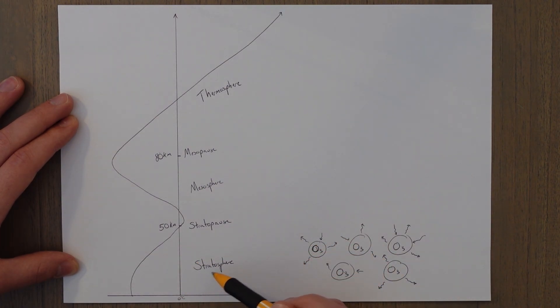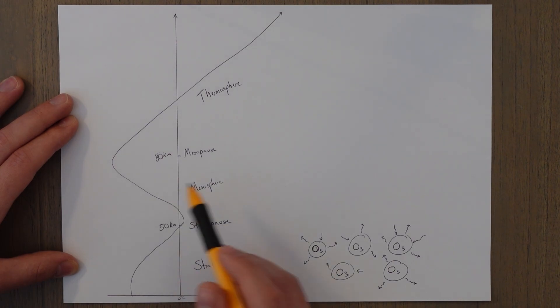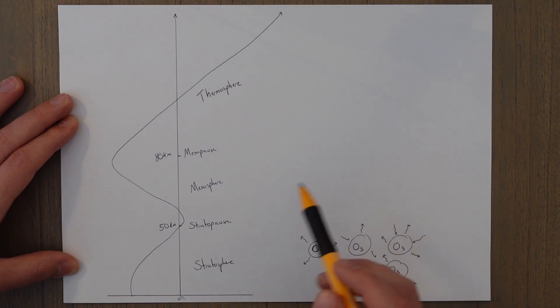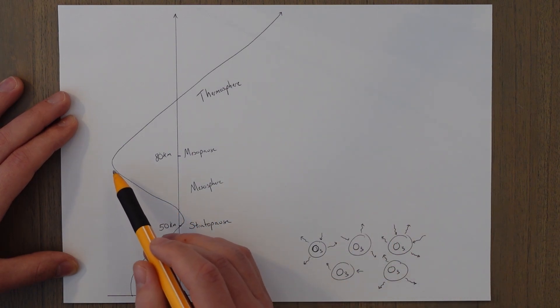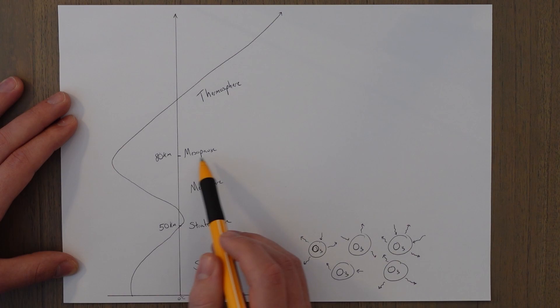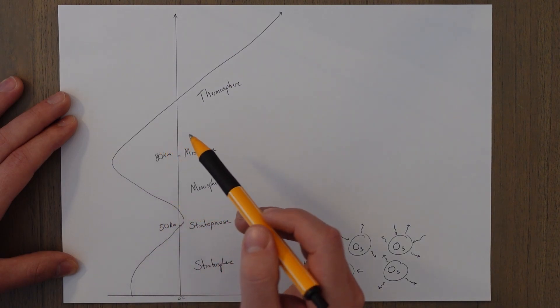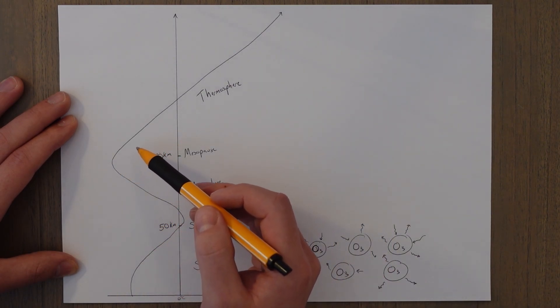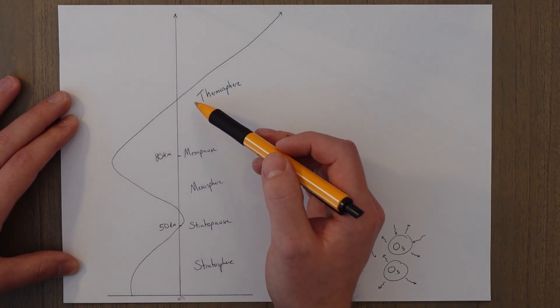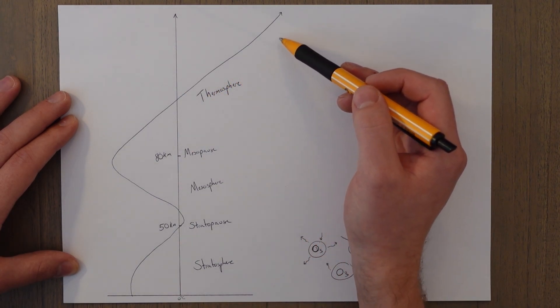The end point of the stratosphere is the stratopause, and at this point the temperature starts again to reduce with altitude because there is no more ozone present. This continues to drop all the way down until the mesopause, which is located around 80 kilometers. At this point we're in the final layer which is known as the thermosphere, where the temperature again starts to increase as we rise up the altitude levels.